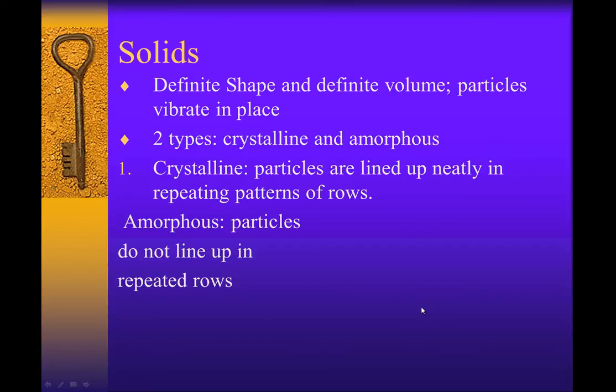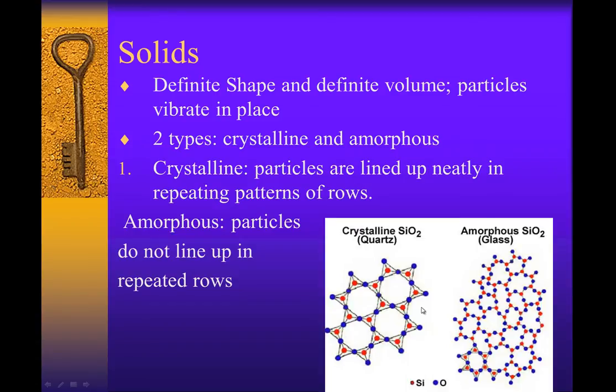Amorphous solids—this time the particles do not line up in nice repeating rows. They do create rigid structure, but it's not repeating. Here's a crystalline example of quartz with three blue and one red in the middle. Here it's a little bit more random—the sizes are different, shapes are different structures. Even though they're both made out of the same silicon oxide, you can see that the structure is a little bit different.